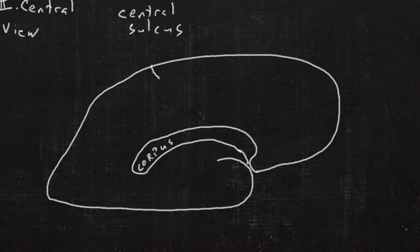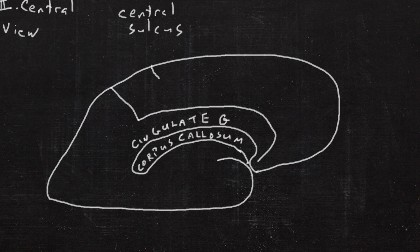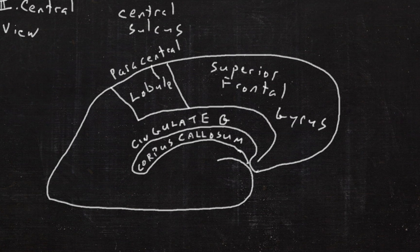In the middle is the corpus callosum, the white matter tract between the two hemispheres. Then on top of that is the cingulate gyrus, and then the frontal lobe is only the superior frontal gyrus from the medial face.